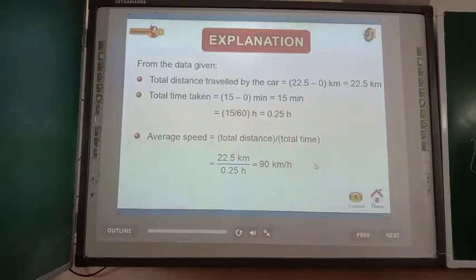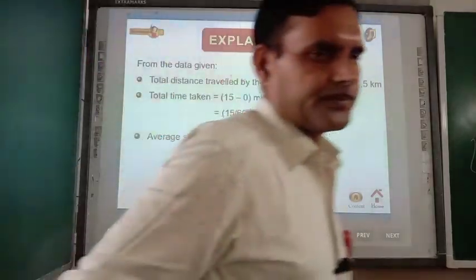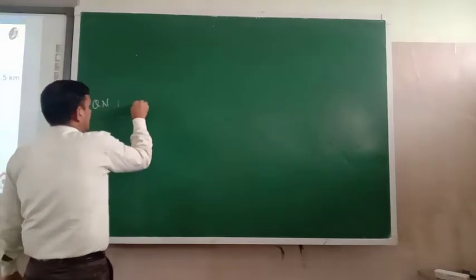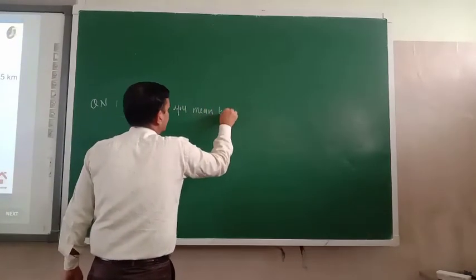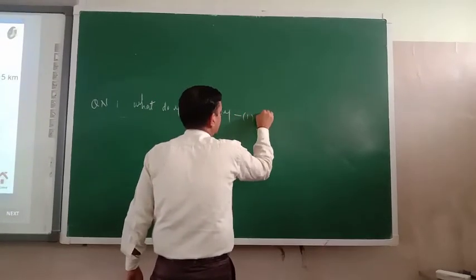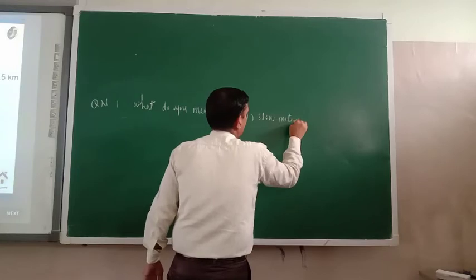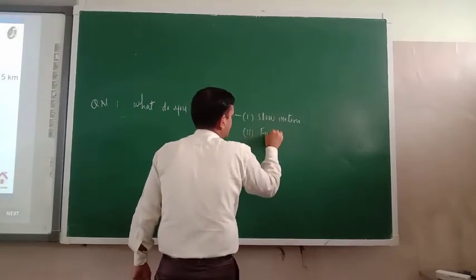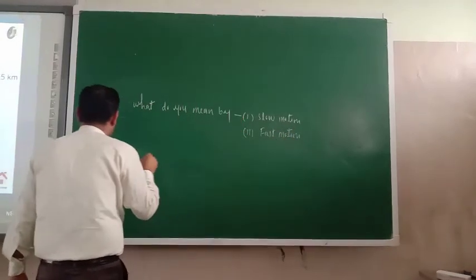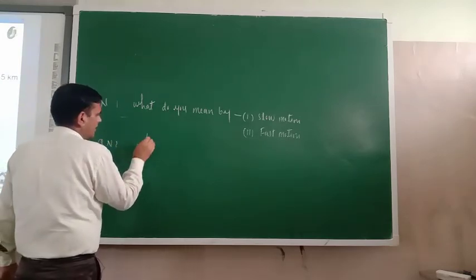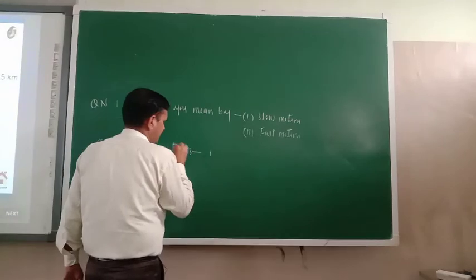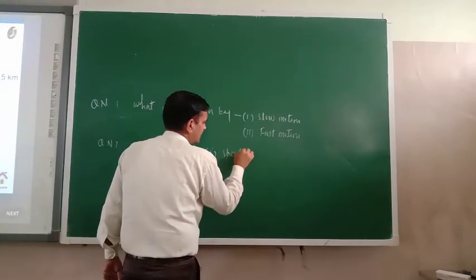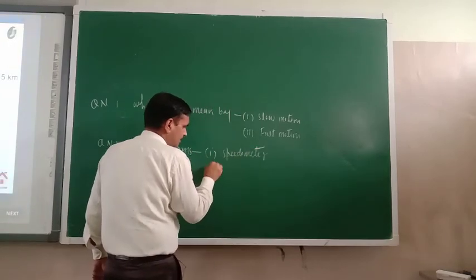Note down some questions. Question number one: what do you mean by slow motion and fast motion? Question number two: define the terms speedometer and odometer. In addition to these two questions, the numericals covered in today's lesson should also be solved.